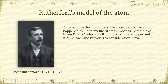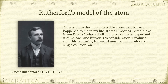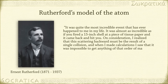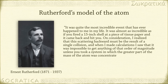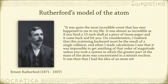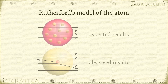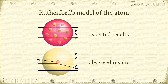On consideration, I realized that this scattering backward must be the result of a single collision. And when I made calculations, I saw that it was impossible to get anything of that order of magnitude unless you took a system in which the greater part of the mass of the atom was concentrated in a minute nucleus. It was then that I had the idea of an atom with a minute massive center carrying a charge. The results implied that an atom must be made mostly of empty space, but with a small core of positively charged material that contained most of the mass of the atom. This was the nucleus.